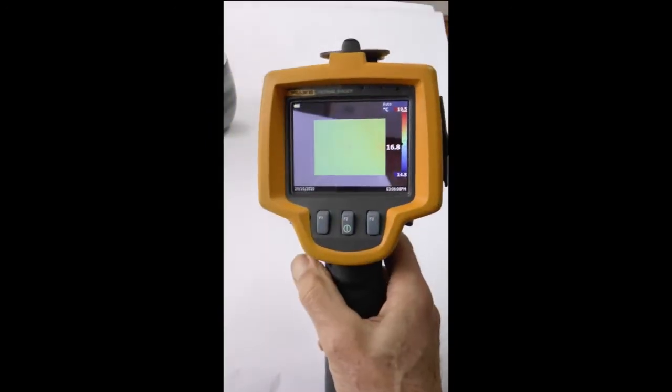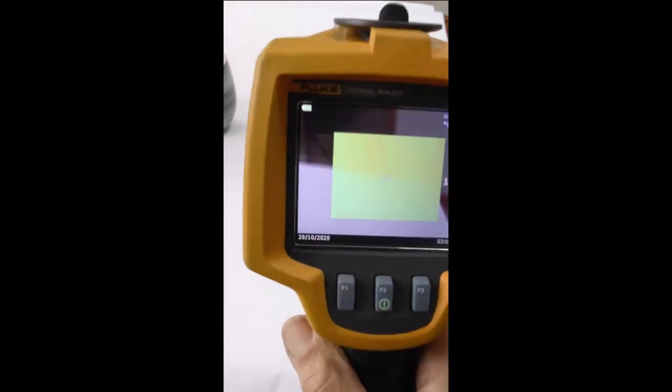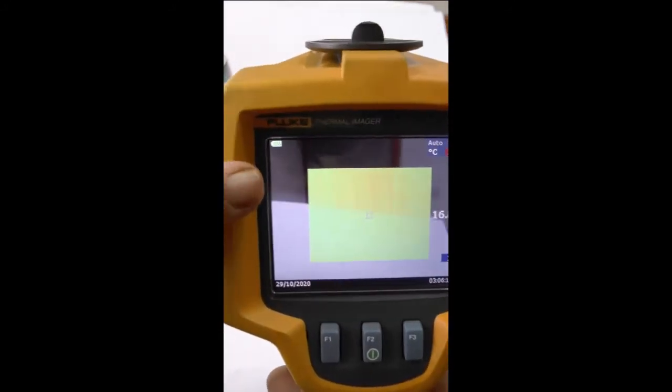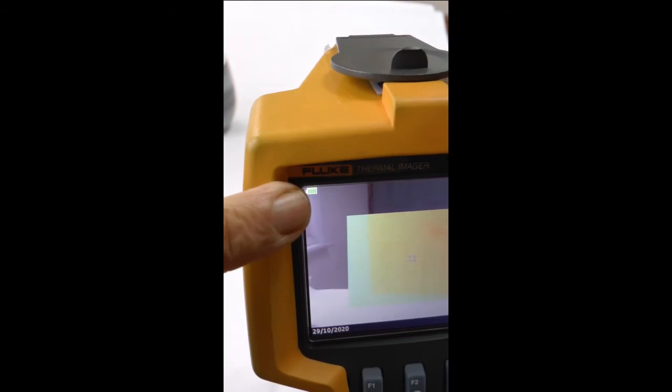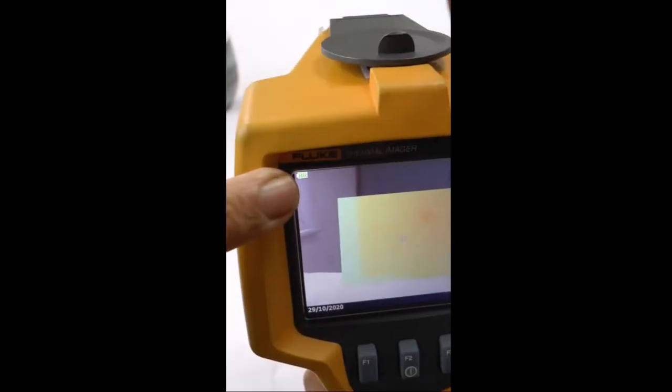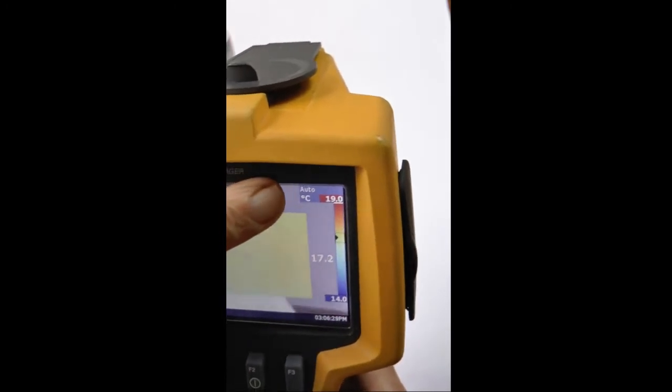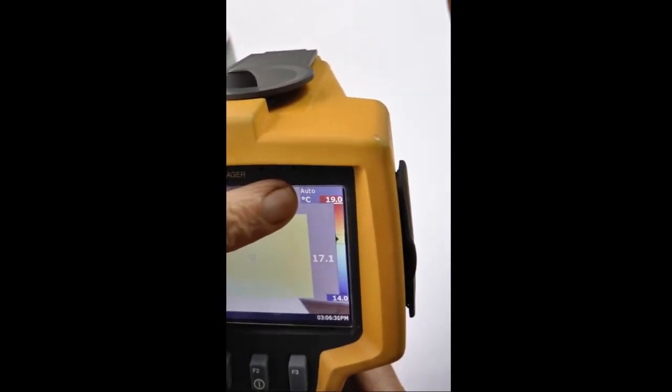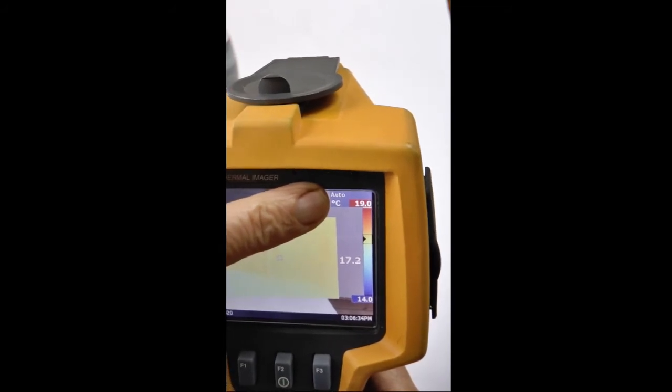Before we take thermal images, we have to do some checks. Look in the top left of the screen—the battery indicator here is all green, so it's a well-charged battery. Then look at the top right, where it says auto, which is the best simple way to use the camera.